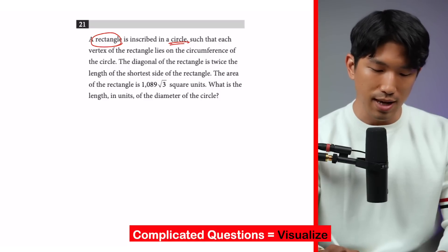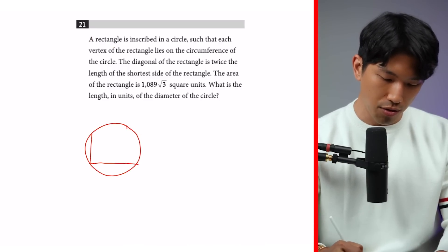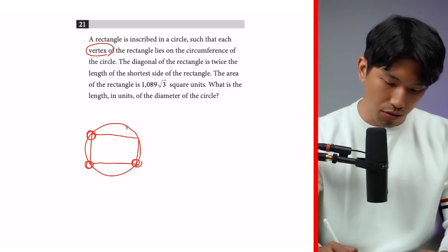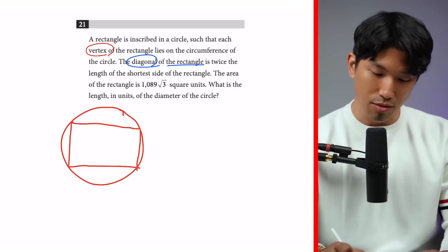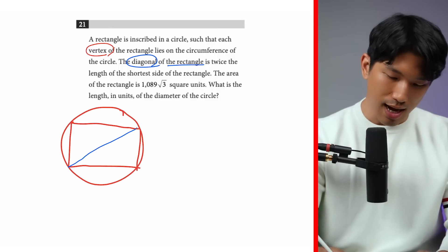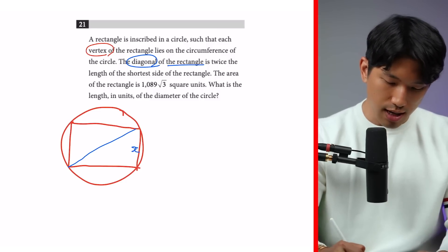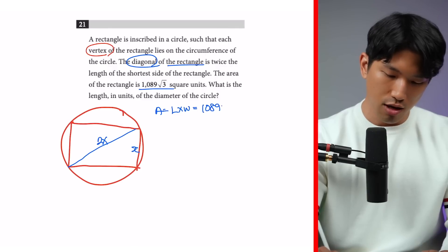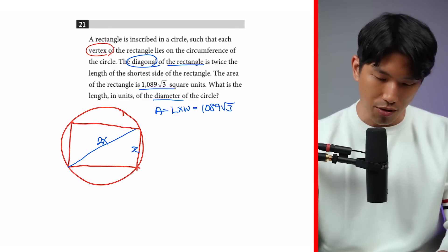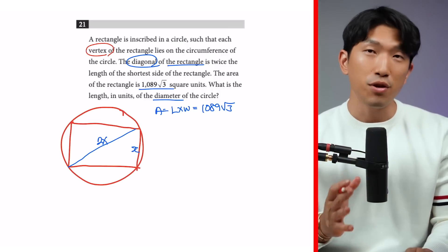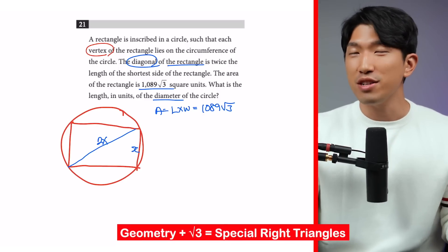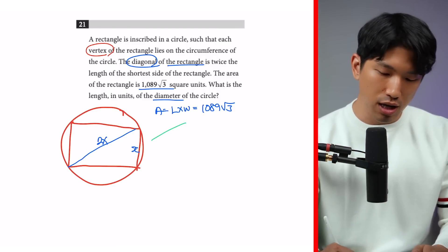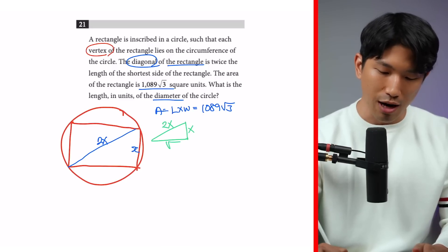The question tells us there is a rectangle inscribed in a circle, with the corners of the rectangle touching the circumference. The diagonal of the rectangle is twice the length of the shortest side — so if the short side is x, the diagonal is 2x. The area is 1089 root 3. Whenever you see a radical 3 in a geometry question on the SAT, there's almost certainly a special right triangle involved — that's one of the very few cases where a shape has a radical 3.